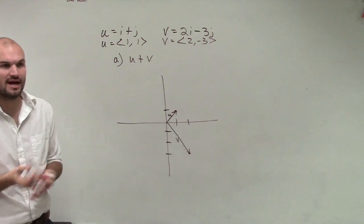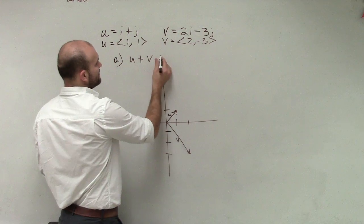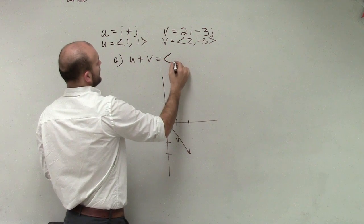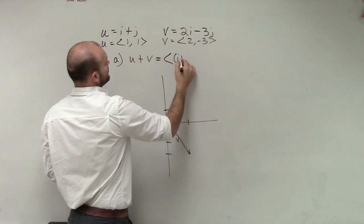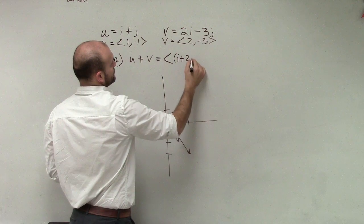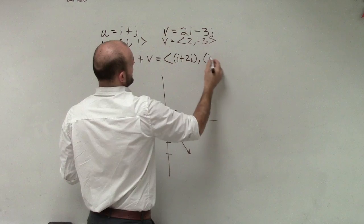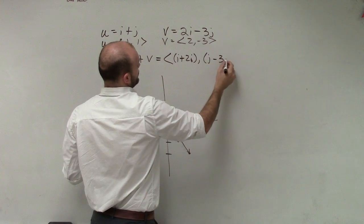So really, in this case, even if I'm doing i and j, that's okay. I can say u plus v is going to equal i plus 2i comma j minus 3j,